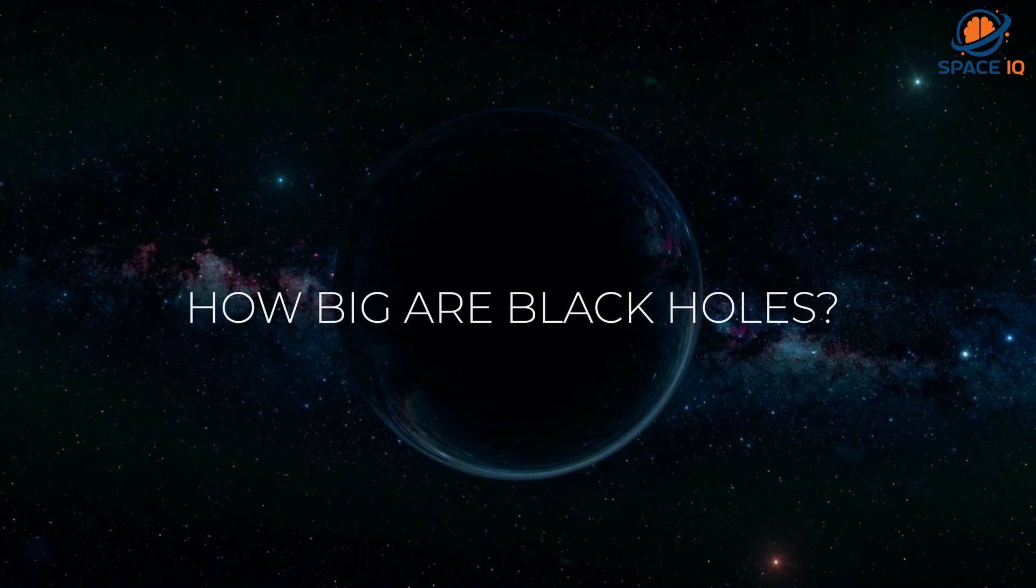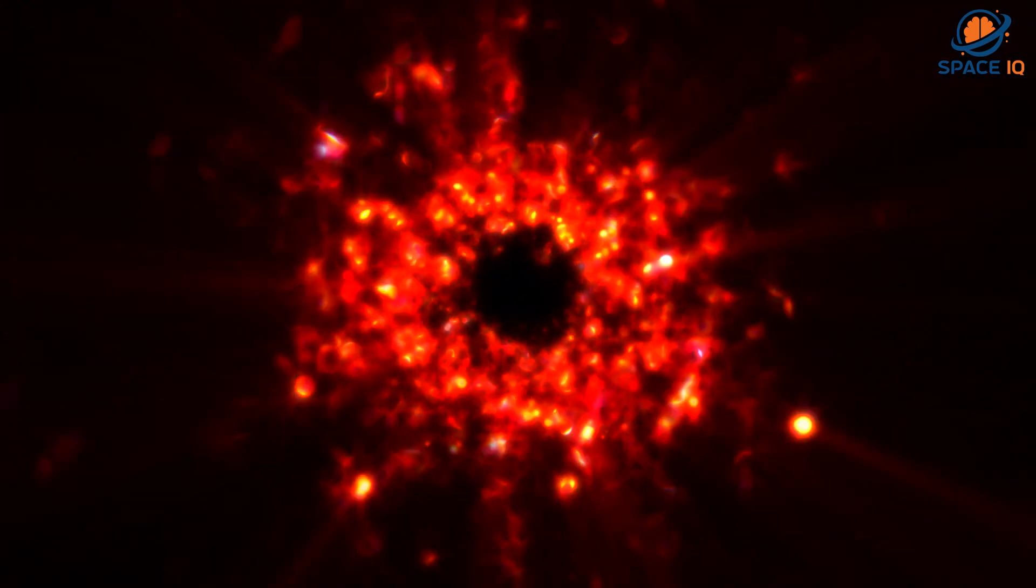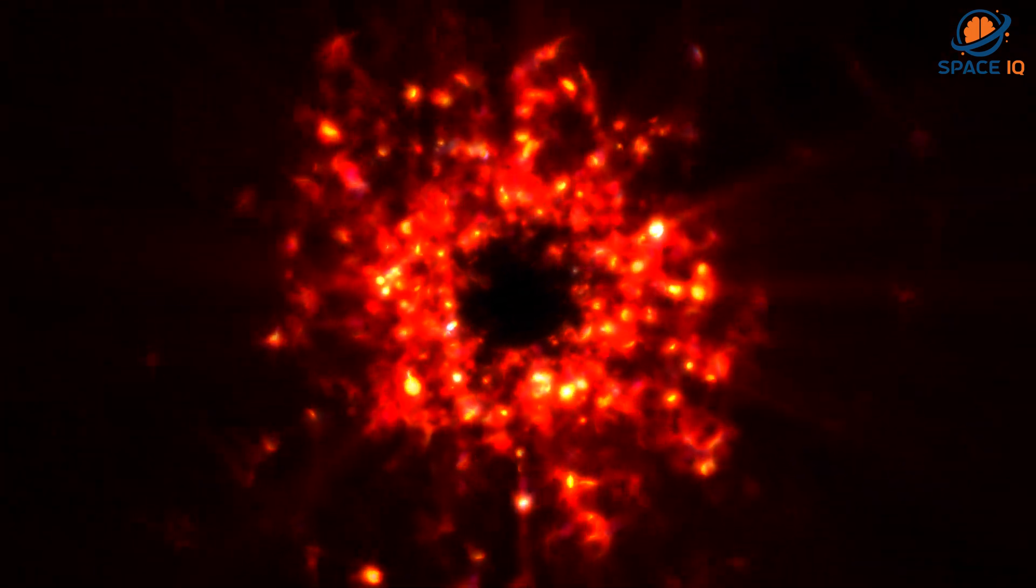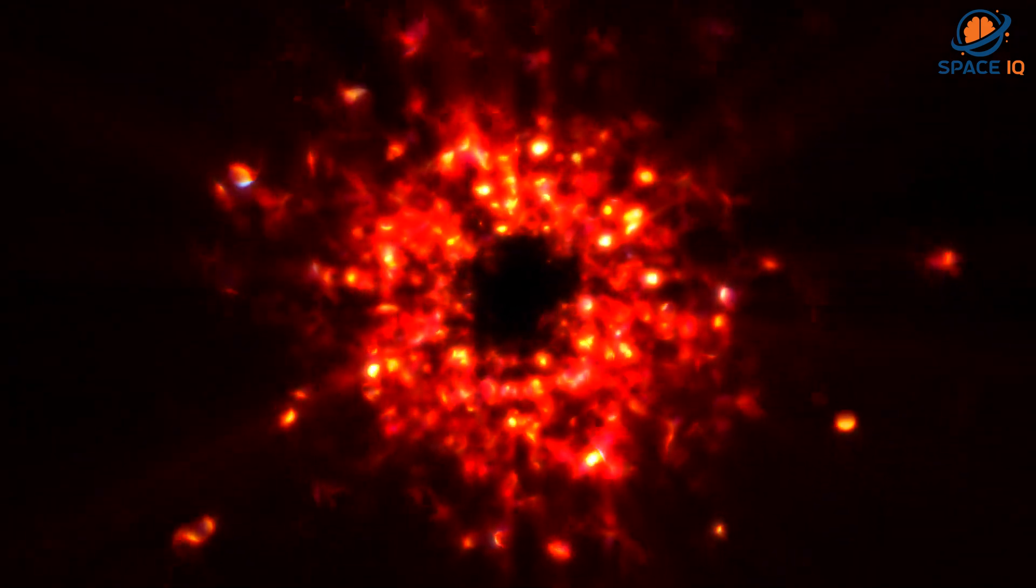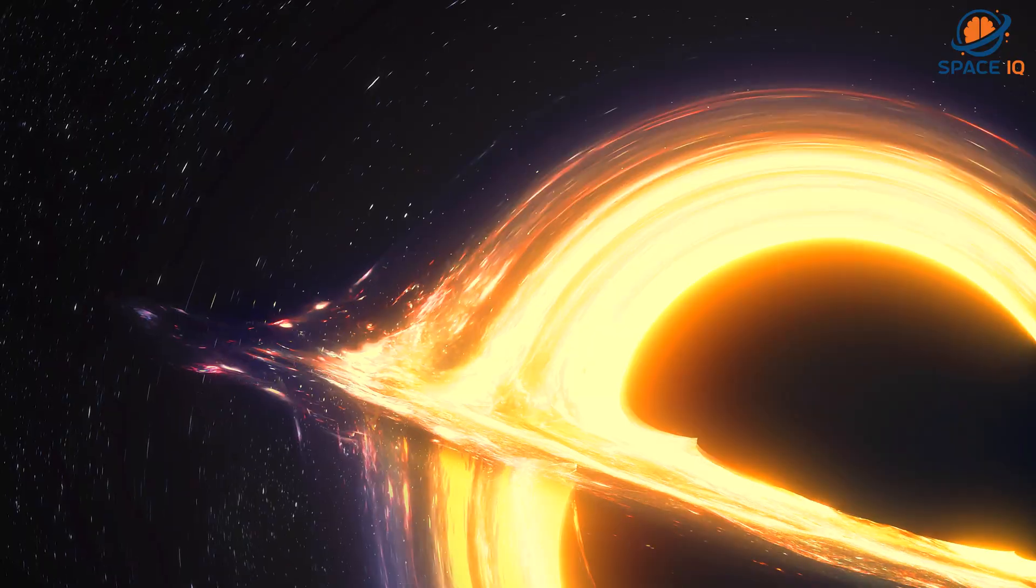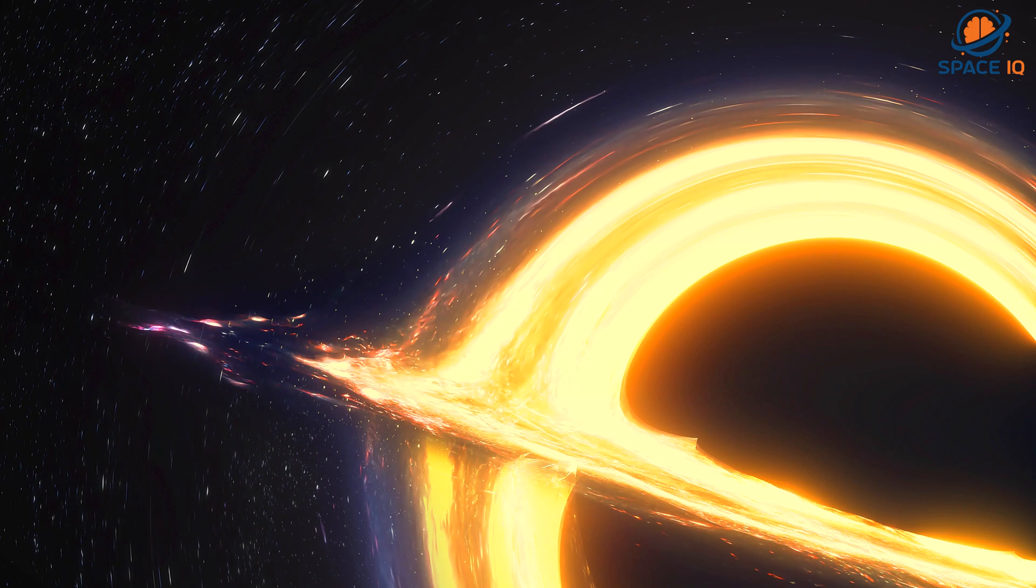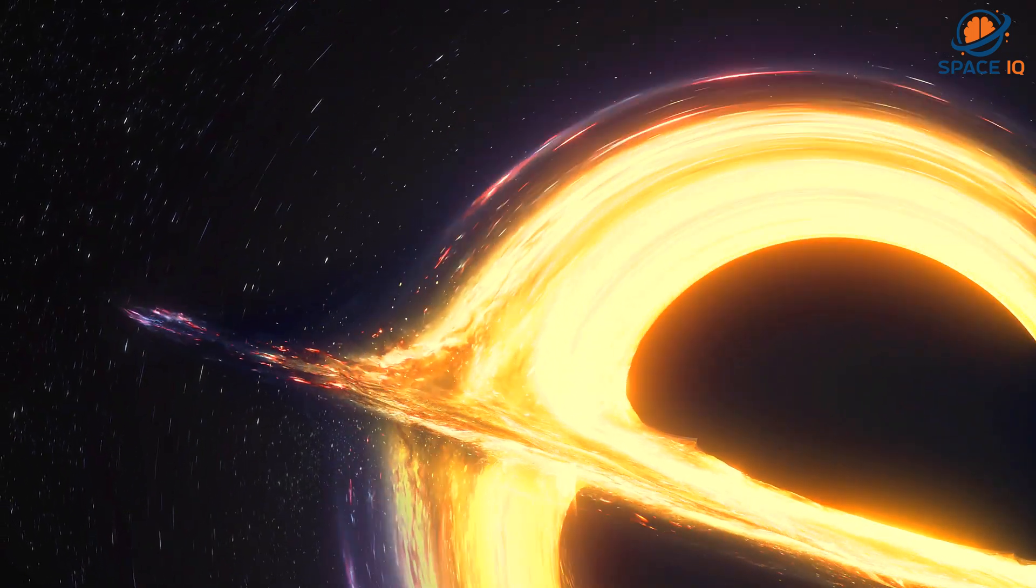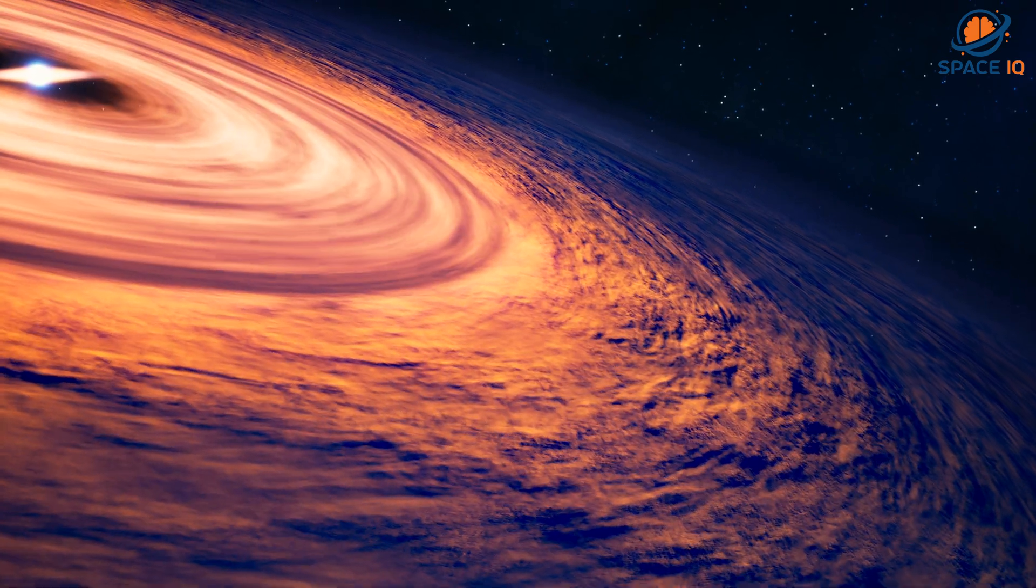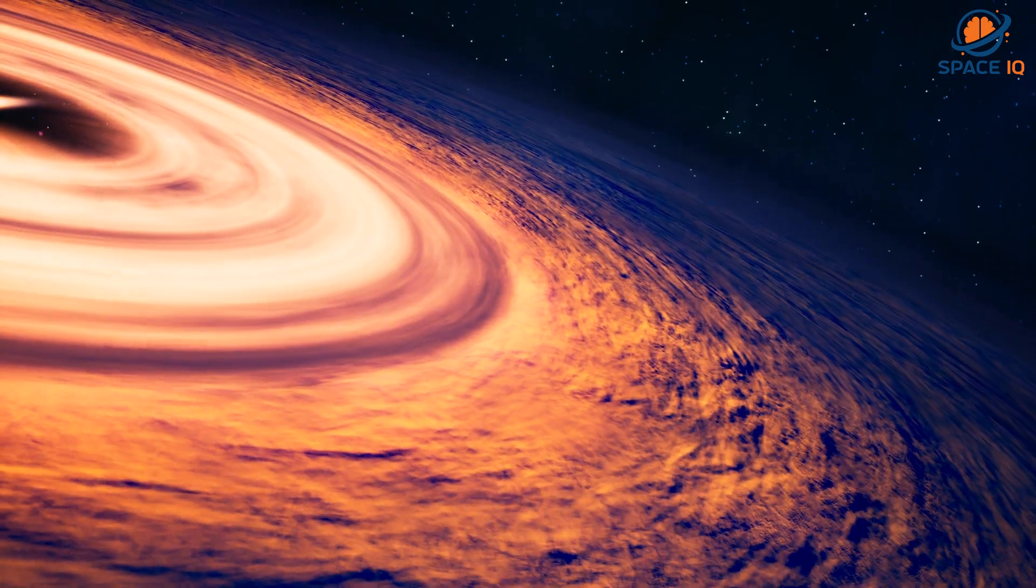How big are black holes? Black holes can be big or small. Scientists think the smallest black holes are as small as just one atom. These black holes are very tiny but have the mass of a large mountain. Mass is the amount of matter or stuff in an object. Another kind of black hole is called stellar. Its mass can be up to 20 times more than the mass of the sun.